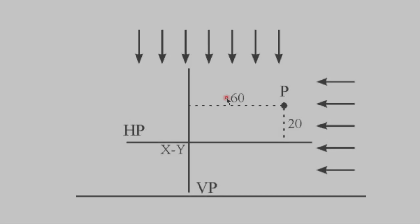Now we can also describe the position of any point in space, as point P is 20 mm above HP and 60 mm in front of VP.